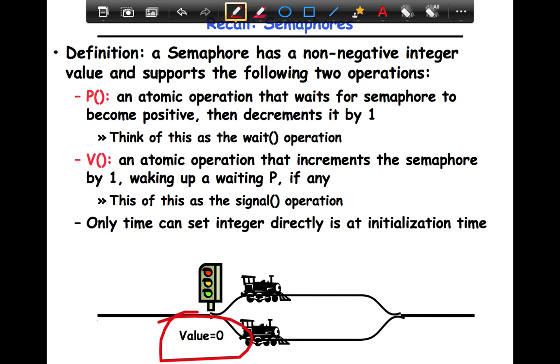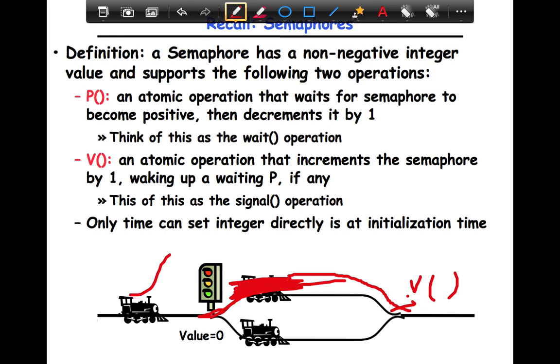So any further P's - this is a point of P, this is a point of V - any further P's wait at the light until one of them gets through, calls V, and then releases the resource. Once that happens, then this can get through, but until that point the lane is occupied.